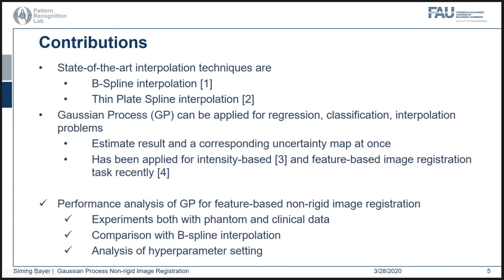One of the state-of-the-art interpolation techniques is B-spline interpolation. It has been widely used for clinical applications such as registration of braced MR images or intraoperative brain shift compensation. Thin-plate splines are another common choice for deformable image warping and have been applied, for example, for 3D-3D registration of vasculature. Gaussian process itself is a powerful tool to resolve registration, classification, or interpolation problems.